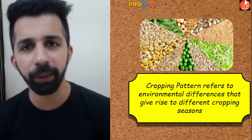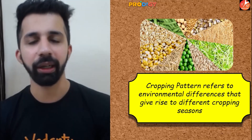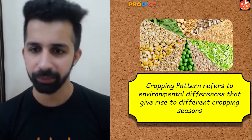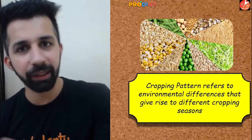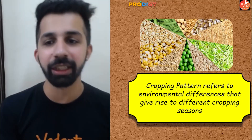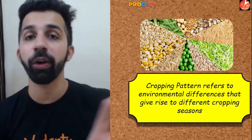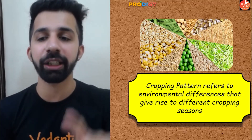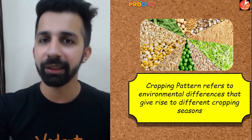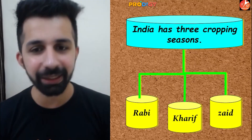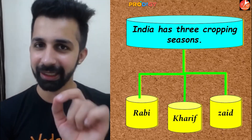What is cropping pattern? Due to environmental differences, we have different climatic conditions and different seasons, which give rise to different cropping seasons. Cropping pattern refers to the environmental differences that give rise to different cropping seasons. Based on this, there are three cropping patterns or cropping seasons: Rabi, Kharif, and Zaid.